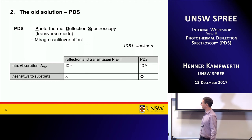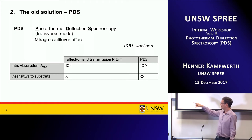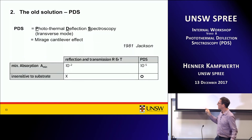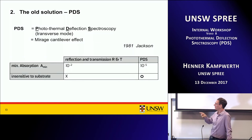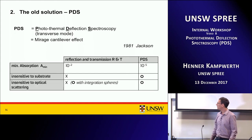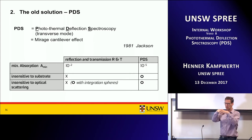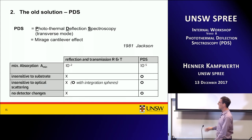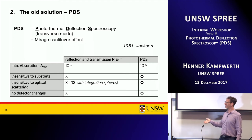PDS is insensitive to the substrate — that's a big advantage. It is also insensitive to scattered light. For the R&T technique you need an integration sphere to collect all light scattering in different directions, but with PDS you don't have to worry about it — it always works. Another cool thing is there are no detector changes. Even if you go into far infrared — like 25 micrometer wavelength — the PDS still works because the detector is actually the sample itself, which is quite awesome.